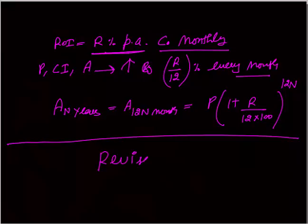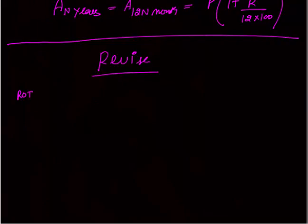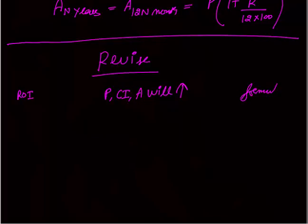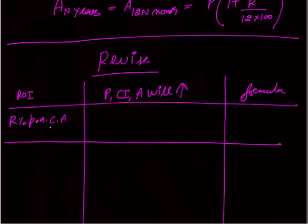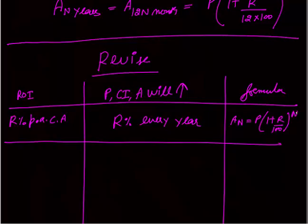Let me revise the concepts from the previous chapter as well as this chapter. When the rate of interest is R% per annum compounding annually, your principal, compound interest, and amount will increase by R% every year, and the formula is: A(N) = P × (1 + R/100)^N. When the rate of interest is R% per annum compounding semi-annually, the semi-annual rate is R by 2, so the amount increases by R by 2% every six months.